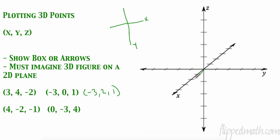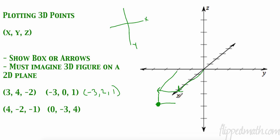Now for the arrow method with (4, -2, -1): go four on x and draw an arrow. The trick is understanding you get to about here, then go negative two on the y. Then down one on z — right here, that's the point. It may look like it lines up with three, but remember we're going three-dimensional. The box method can make that depth clearer.